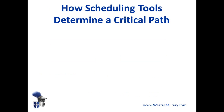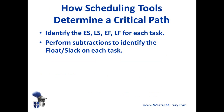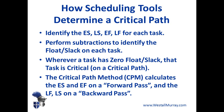This is exactly what scheduling tools like Microsoft Project and Primavera do to determine which tasks are critical. They identify for every task the early start, late start, early finish, and late finish, then perform subtractions just like we did to determine how much float or slack there is on every task. Wherever a task has zero float or zero slack, that task is critical — it's on a critical path. That method of determining early start, late start, early finish, and late finish is performed using something called the critical path method. It calculates early start and early finish on a forward pass through the schedule, and late finish and late start on a backward pass. I explain exactly how to do that manually in one of my other critical path videos, but scheduling tools do this for you automatically.